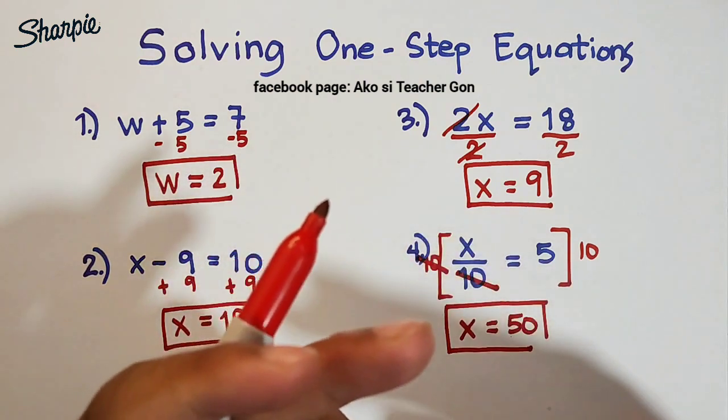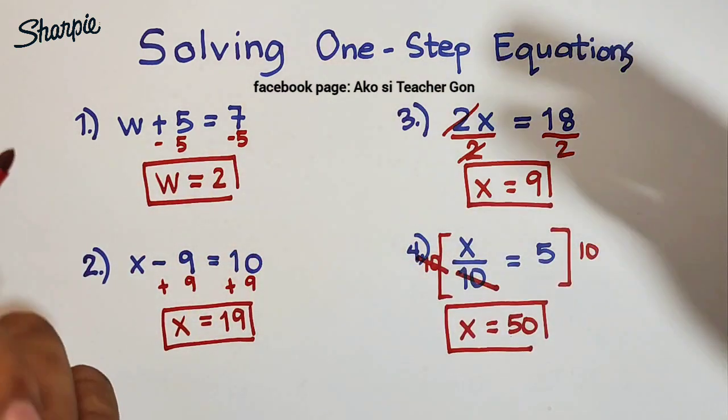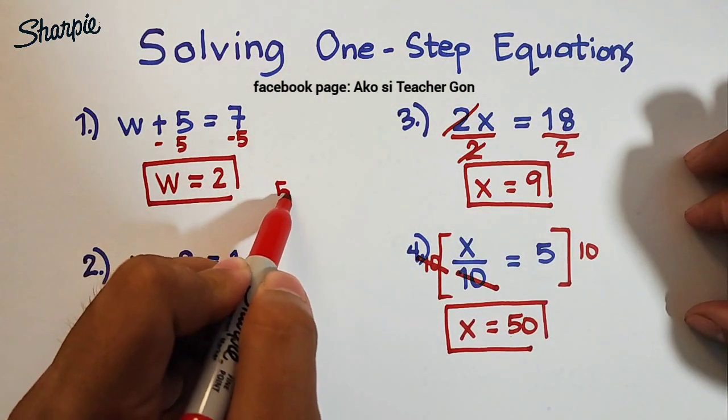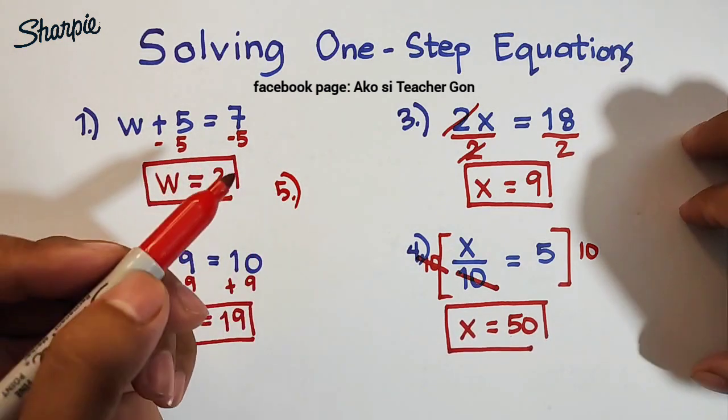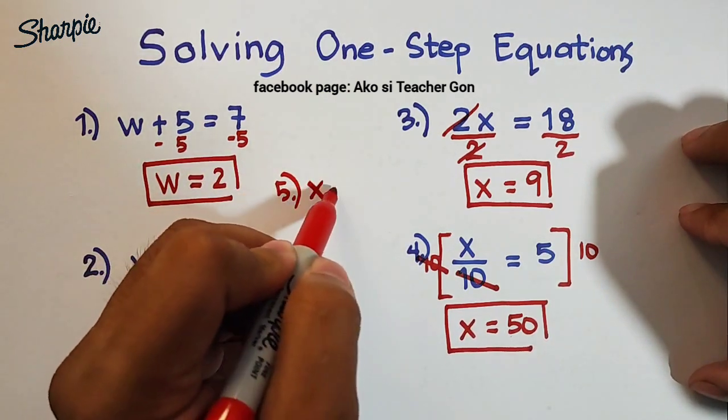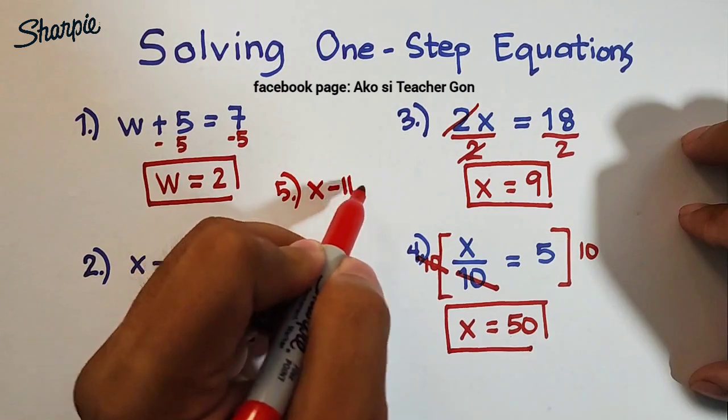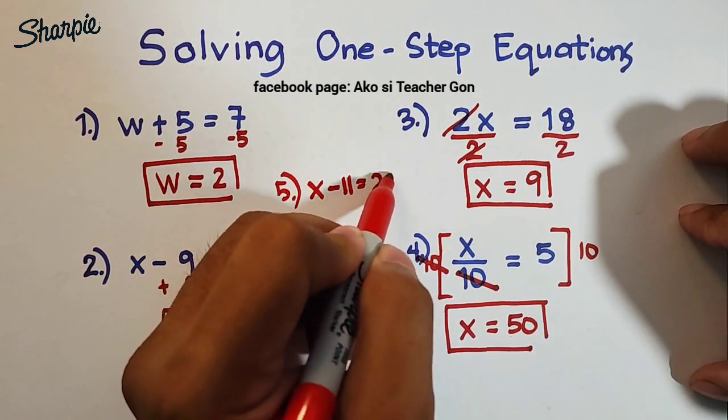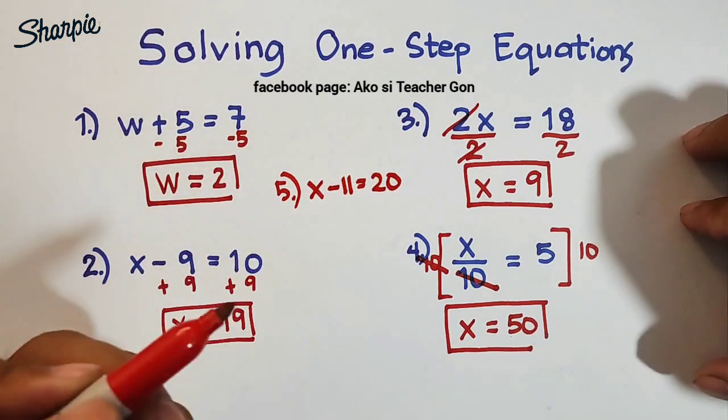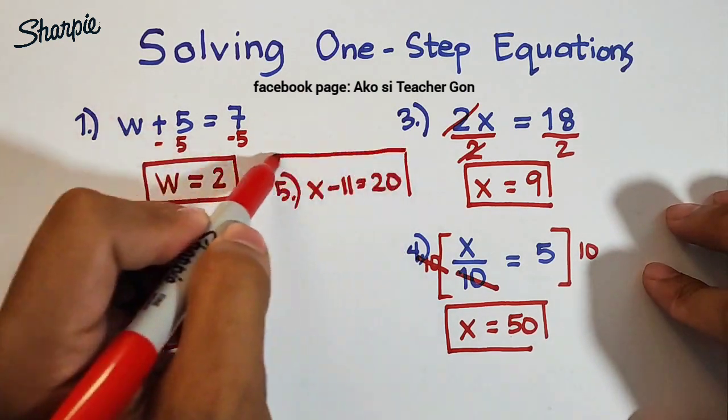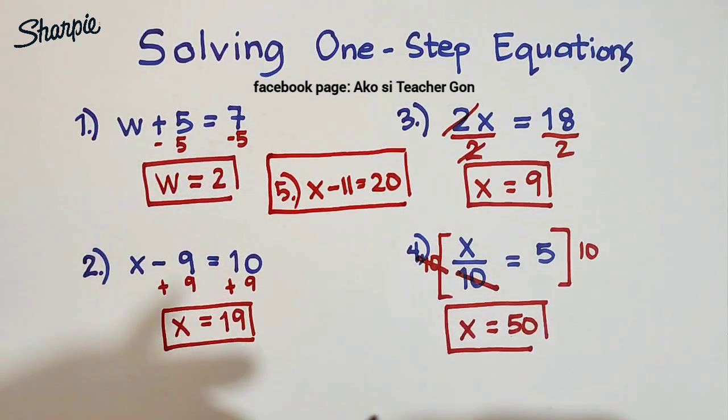Now I hope you learned something from this video. And for your task guys, for number five, I want you to find the solution given this equation: x - 11 = 20. So I hope to see your answers within our comment section.